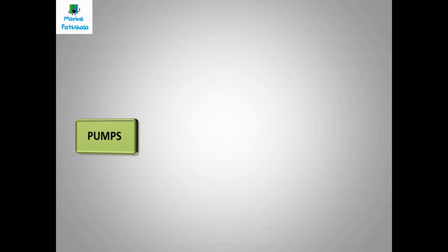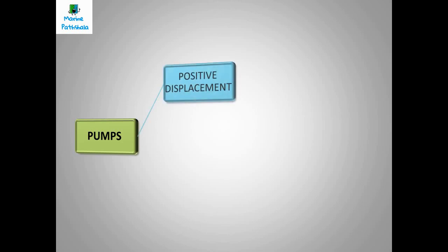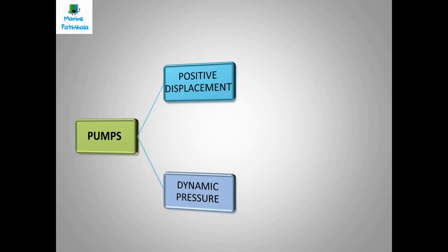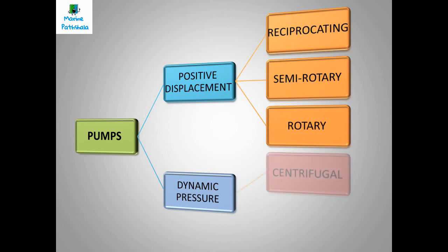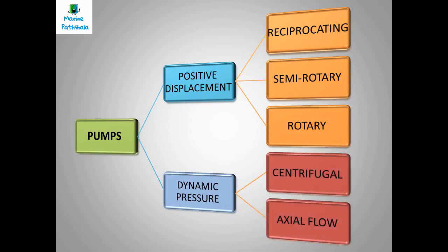There are two main types of pumps used: one is positive displacement and the other is dynamic pressure pumps. Positive displacement pumps are further classified into reciprocating pumps, semi-rotary pumps, and rotary pumps. Dynamic pressure pumps have two types: centrifugal pumps and axial flow pumps.